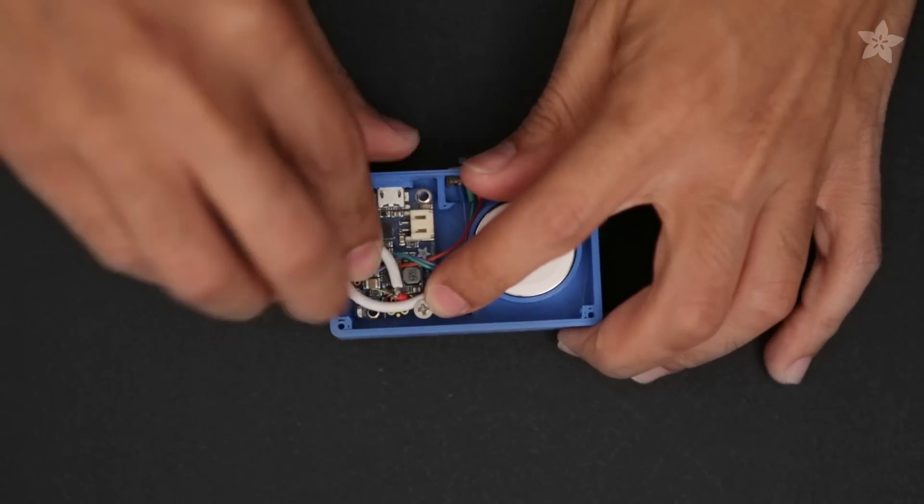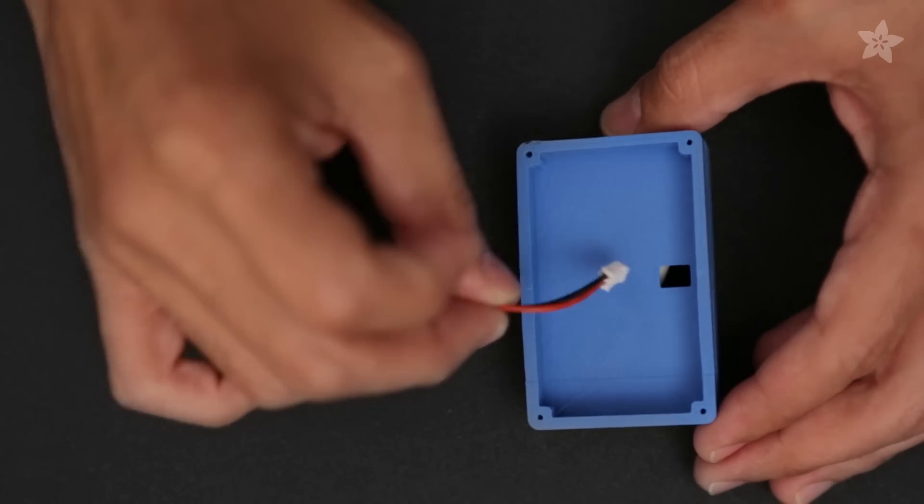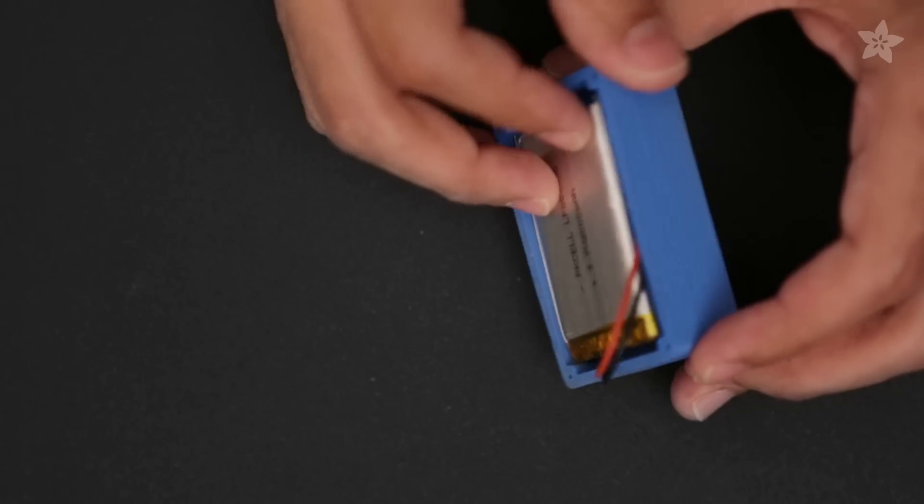You can adjust the length of wire from the Qi charger so it neatly fits inside the enclosure. The cable from the battery is inserted through the back and connects to the JSD port on the PowerBoost.